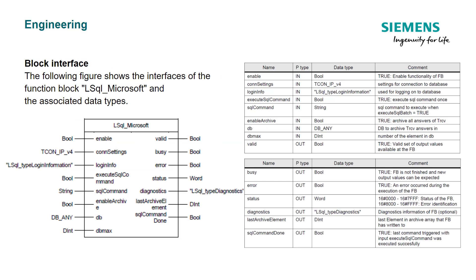Here is an example of the overall block interface. The following figure shows the interfaces of the function block LSQL Microsoft and the associated data types, broken up into two tables on the right covering ins and outs. You will want to identify the things that are required, starting with enable, which enables the overall functionality of the function block. Also go through the connection settings, where you will identify the IP address of the server and the port connections. From there, go into the login information — collect this from your IT department or from the build that you did for the MSQL server.